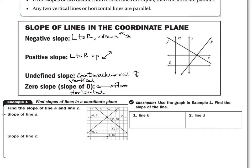Looking at these lines, we want to identify which are positive, negative, undefined, and zero. As I look for the negative slope lines, there is one line that is negative — letter J. From left to right it's going down, so letter J is negative slope. Positive slope from left to right going up happens to be letter K. Undefined slope — lines that are straight up and down — happen to be letters N and Y. Zero slope lines going left to right happen to be letters L and X.